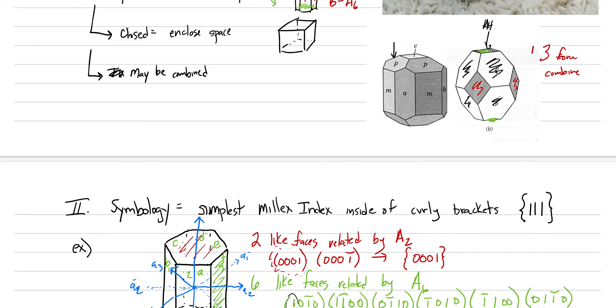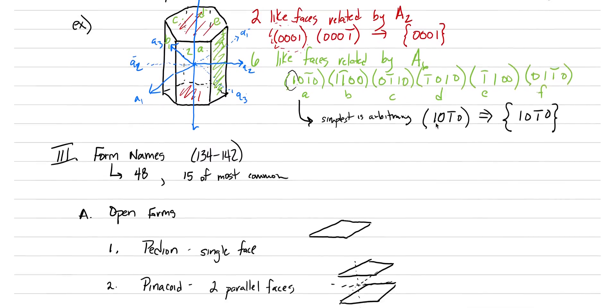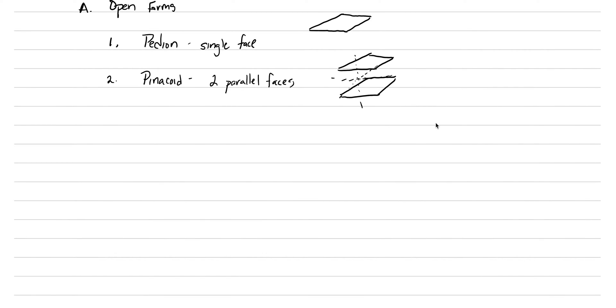There are other names that we can learn though, right? What about this one where they're angled pointed up? What about this one where there's six faces? There are names for that. They're also open forms. The third one we need to learn is a dome. And there's another name here called sphenoid. Dome and sphenoid are very similar to one another. These are two intersecting faces about some symmetry element. It can either be a mirror or it can be an A2.